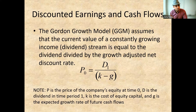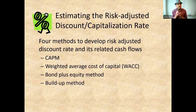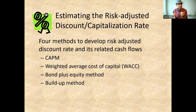Another method is the Gordon model, where P (price) equals D (dividends) divided by (K minus G) — K being the cost of equity and G the growth rate. This is used for shares. For estimating the risk-adjusted discount rate, we can use the Capital Asset Pricing Model (CAPM), the weighted average cost of capital (WACC), the bond plus equity method, or the build-up method. These models are used when we talk about shares and marketable securities, and their technical details are covered in finance classes.